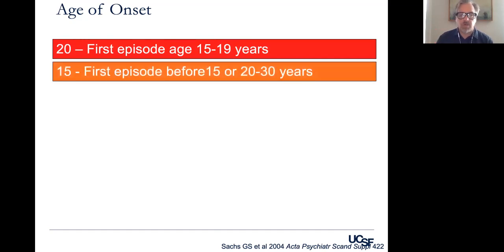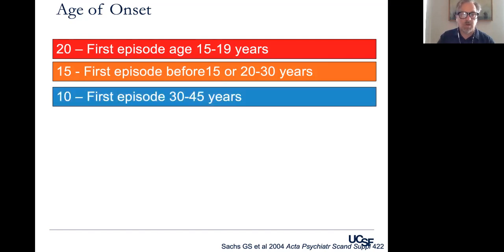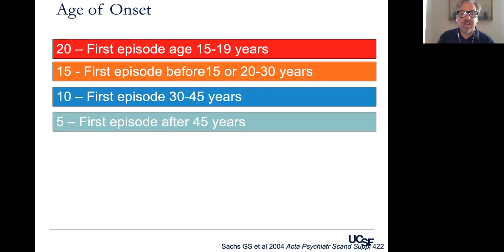If your first episode — whether depression or mania — occurs before age 15 or in your young adult years of 20 to 30, that would also be suspicious for bipolar disorder. The older you get, if you have a first episode of a mood disorder, the less likely it is to be a bipolar disorder.